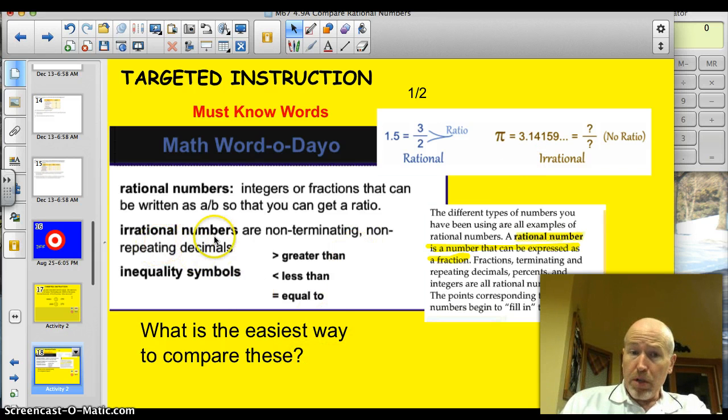We also need to know what those irrational numbers are then. So, they're numbers that you can't write as a fraction because they don't end. They just continually go on. They do not terminate.